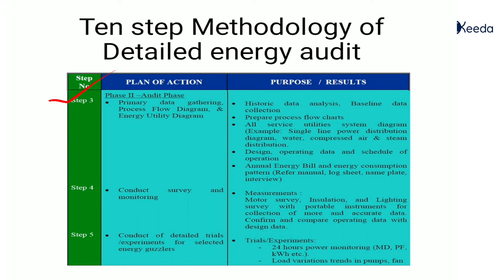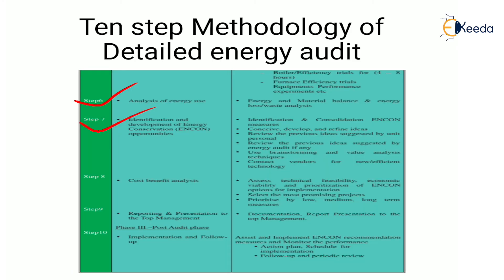Step 6 is analysis of energy use — energy and material balance, and energy loss or waste analysis is done. In Step 7, identification and development of energy conservation opportunities takes place. This includes identification of energy conservation measures, conceiving, developing and refining ideas, reviewing previous ideas suggested by unit personnel and by prior energy audits, applying brainstorming and value analysis techniques, and contacting vendors for efficient technologies.